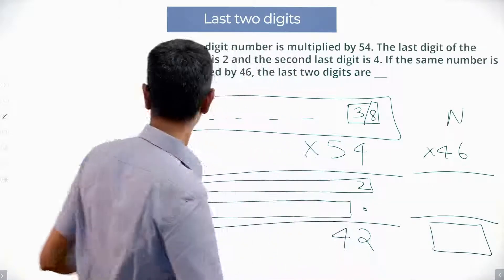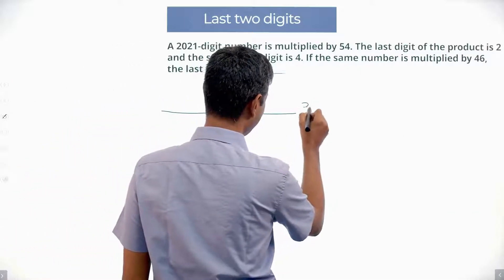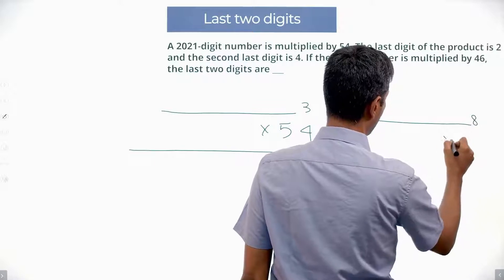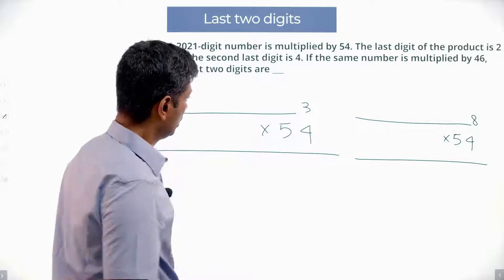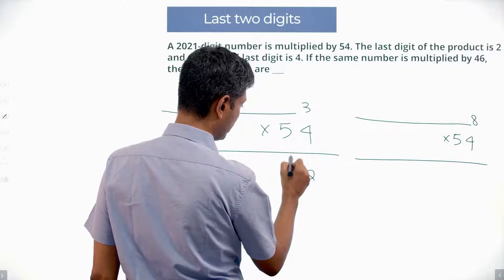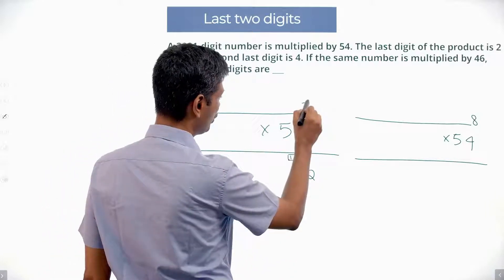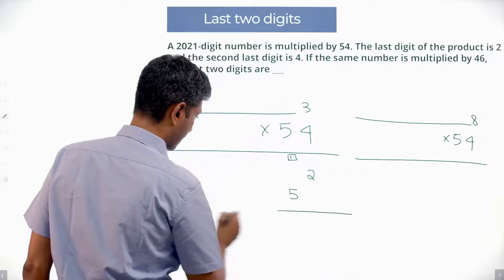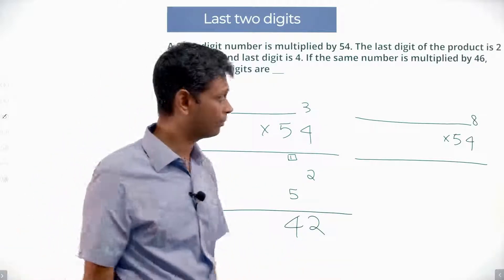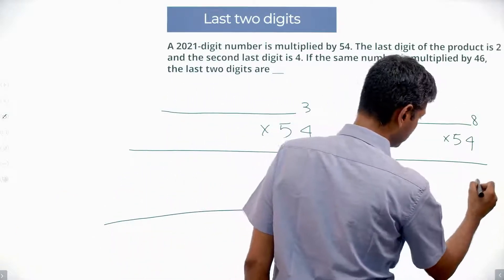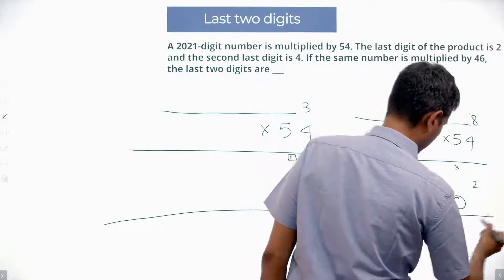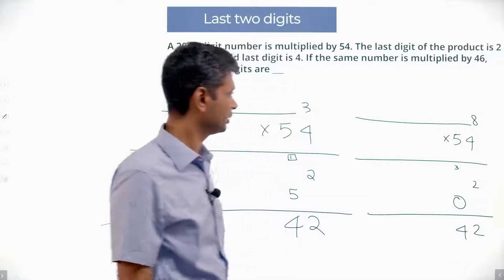Now I'm going to break it into two parts. So now I have a 2021-digit number ends in 3 multiplied by 54, or 2021-digit number ends with 8 multiplied by 54. Now I multiply this. 4 into 3 is 12, 2 and 1 carried over. 5 into 3 is 15. This digit would be 5. And then my last two digits are 42. Here what could it be? 4 into 8 is 32, 2. 3 carried over. 5 into 8 is 40, 0. 4 carried over. My total is 42.